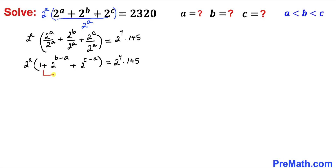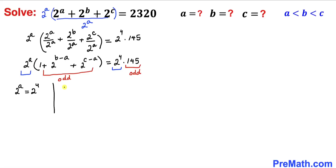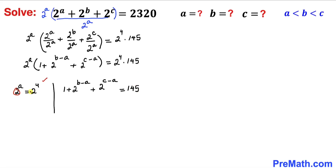On the left-hand side, the expression inside the parentheses is an odd number because we are adding 1 to it. Likewise the right-hand side factor 145 is also odd. Since 2^a and 2^4 share the same base, by comparison we get 2^a = 2^4, so a = 4.